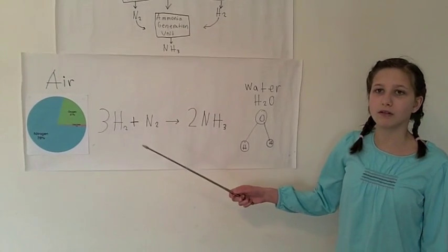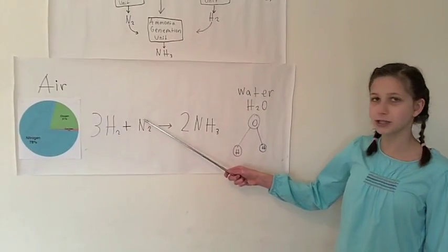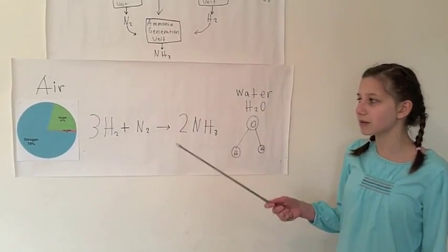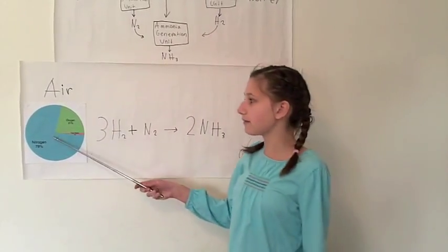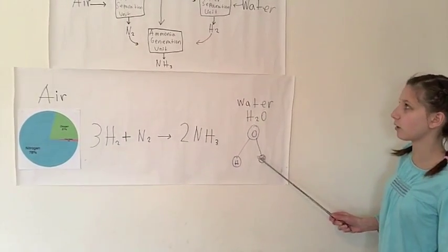How can we get ammonia? Let's look at the chemical reaction. Three molecules of hydrogen combine with one molecule of nitrogen to yield two molecules of ammonia. We have a plentiful supply of nitrogen here around us, which is 78% nitrogen. We have a plentiful supply of hydrogen in our water.